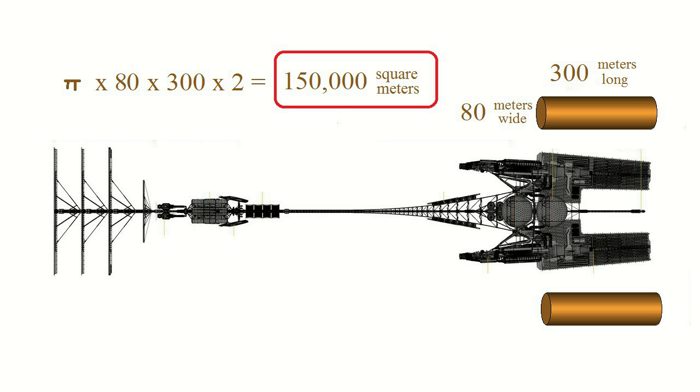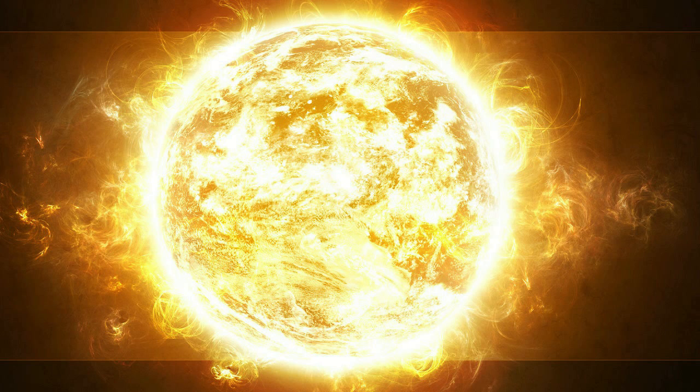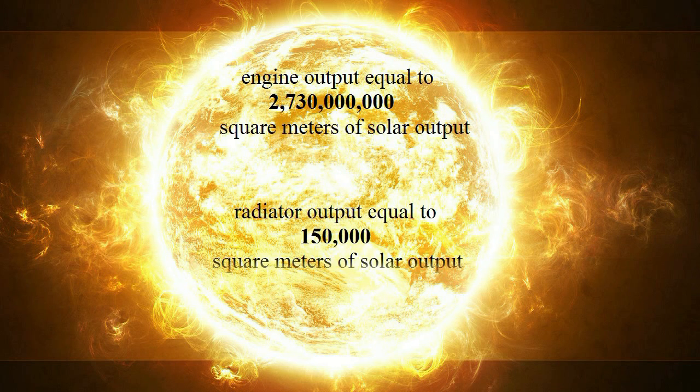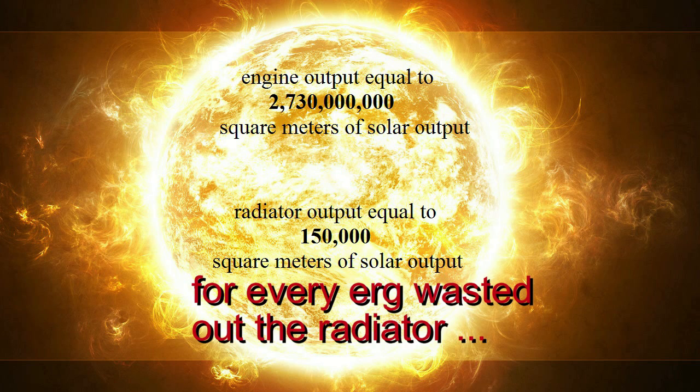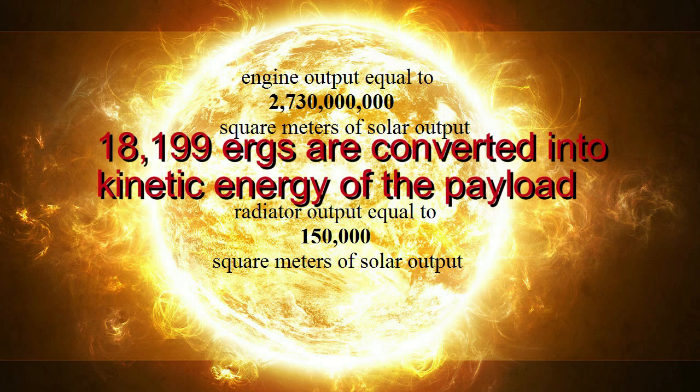The maximum temperature they can glow at is the temperature of the surface of the sun. That is, they glow white hot when running for six months. Don't ask how they glow without melting. We'll just give them that. So the engine energy output is equivalent to 2,730 square miles on the surface of the sun, or 2,730,000 square meters, while the radiators give off the sun's energy at 150,000 square meters. This means that the efficiency of the engine is minimally just about theoretically perfect, or for every erg wasted as excess heat in the engine, 18,199 ergs go directly into the kinetic energy of the ship.